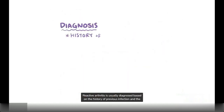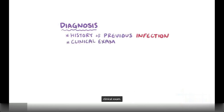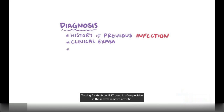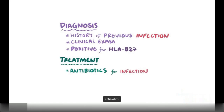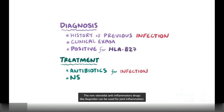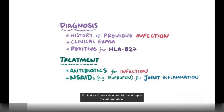Reactive arthritis is usually diagnosed based on the history of previous infection and the clinical exam. Testing for the HLA-B27 gene is often positive in those with reactive arthritis. Treatment focuses on identifying the infection that caused the problem, which usually means antibiotics. Non-steroidal anti-inflammatory drugs like ibuprofen can be used for joint inflammation, and if this doesn't work, steroids can dampen the inflammation.